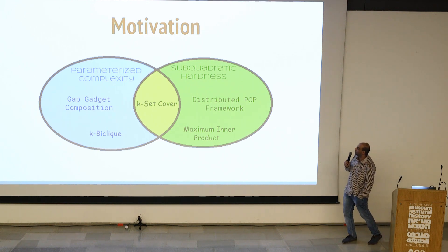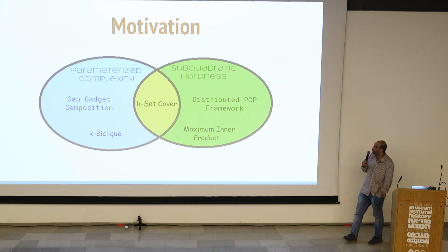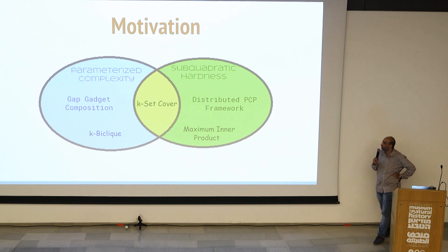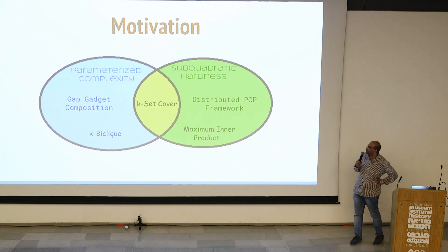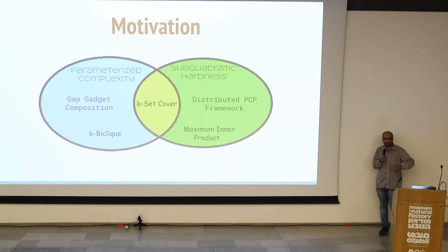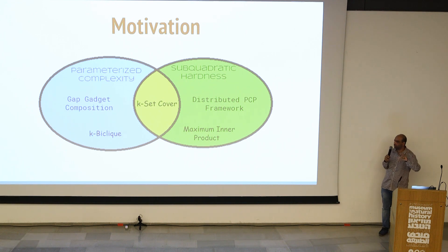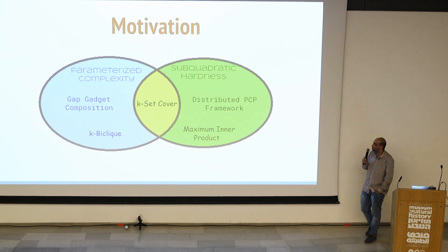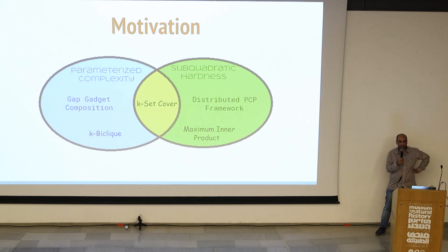The motivation comes from problems in P. There are two kinds: sub-quadratic hardness problems based on OVH, where you want to prove N-squared kind of hardness, and parameterized complexity problems, where you take NP-hard problems and parameterize one aspect so it becomes a problem in P. There are two really different techniques to do gap amplification for these.